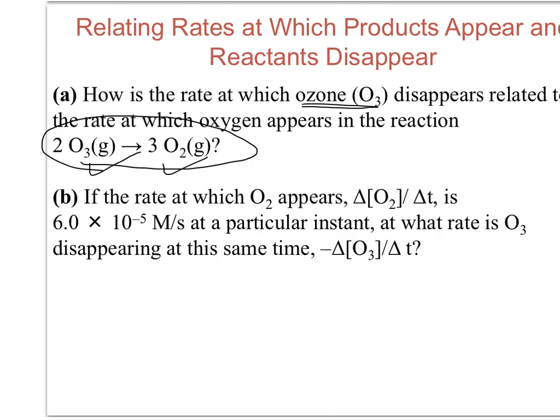In this first problem it has two parts. In the first part it's asking you to write an expression relating the rate of reaction with respect to both the reactant and product. Before we do that, I want you to take a look intuitively at the rate with respect to ozone and oxygen. You can see that for every two molecules of ozone that disappear or decompose, we form three oxygen. What that tells us is that you're going to see oxygen appear somewhat more quickly than you're going to see ozone disappear.